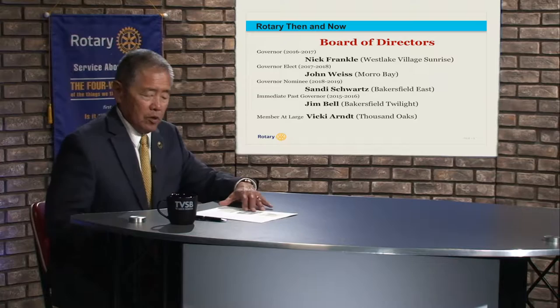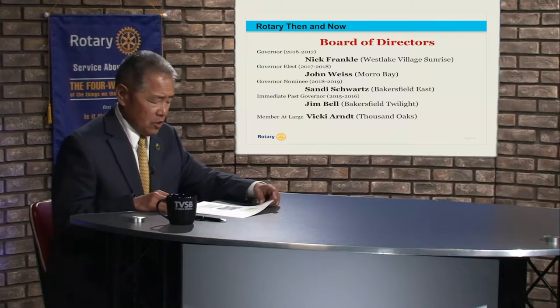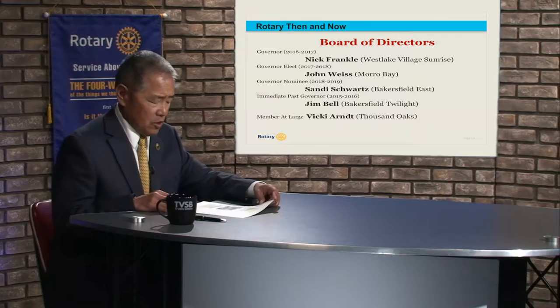The next slide shows the board of directors. Our district is governed — and it is an incorporated district — by the board of directors. The board currently includes the current governor, Nick Frankel of Westlake Village; the incoming governor-elect, John Weiss from Morro Bay; the governor nominee, Sandy Schwartz from Bakersfield East; the immediate past governor, Jim Bell from Bakersfield Twilight; and Vicki Arndt, who is a member at large selected by the current sitting governor, which changes with each governor.